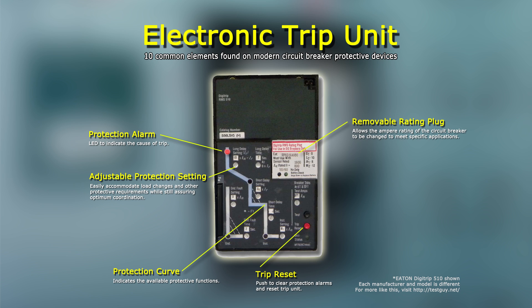Number 6: Unit Status. Many modern solid-state trip devices constantly perform self-diagnostic checks. Potential problems with the trip unit are usually represented by a status lamp or the appearance of a fault message when detected. The trip device may also be able to communicate its alarm or fault condition via a built-in relay contact or digital communication system.